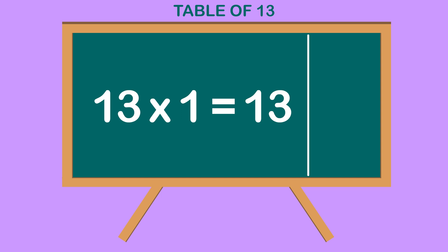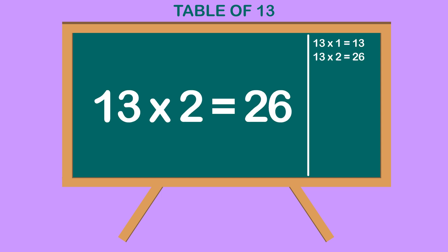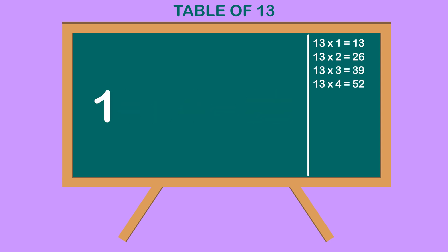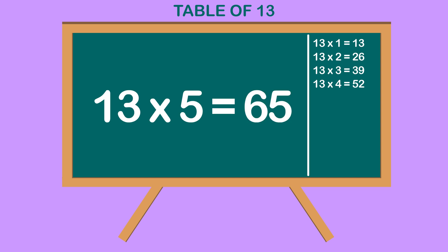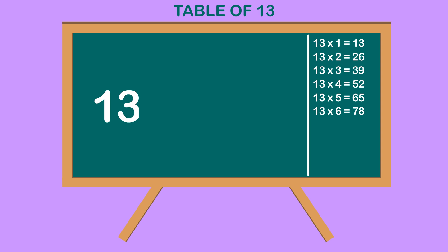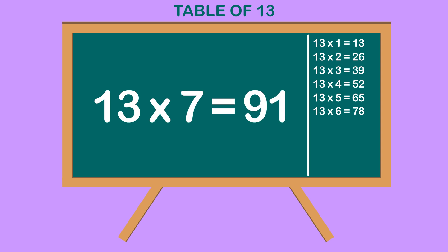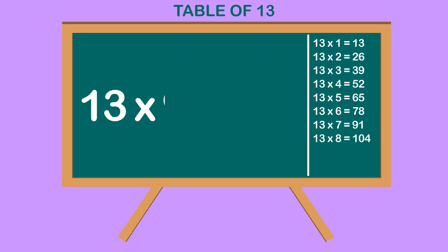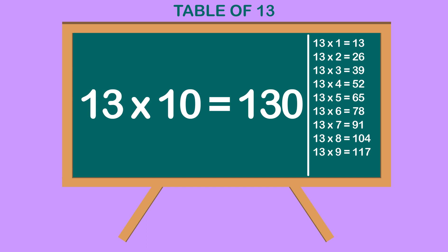Table of 13. 13 1s are 13. 13 2s are 26. 13 3s are 39. 13 4s are 52. 13 5s are 65. 13 6s are 78. 13 7s are 91. 13 8s are 104. 13 9s are 117. 13 10s are 130.